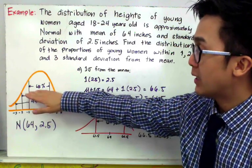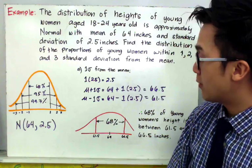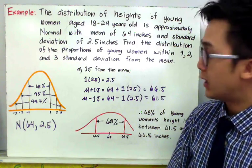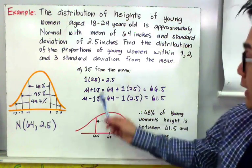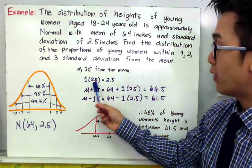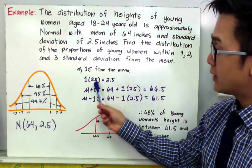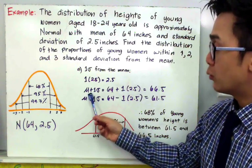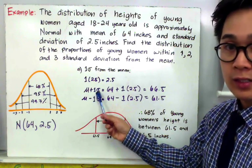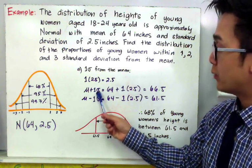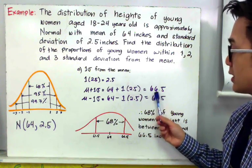To find the first proportion, which is 68%, it means the total number of observations fall within one standard deviation away from the mean. We have a standard deviation of 2.5, so the upper limit is mu plus 1 times the standard deviation: 64 plus 1 times 2.5, which gives us 66.5 inches.